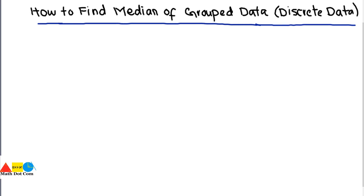Today we are going to see how you can find the median of grouped data. Grouped data is further divided into two types: discrete data and continuous data. Today we will learn how to find the median of discrete data.